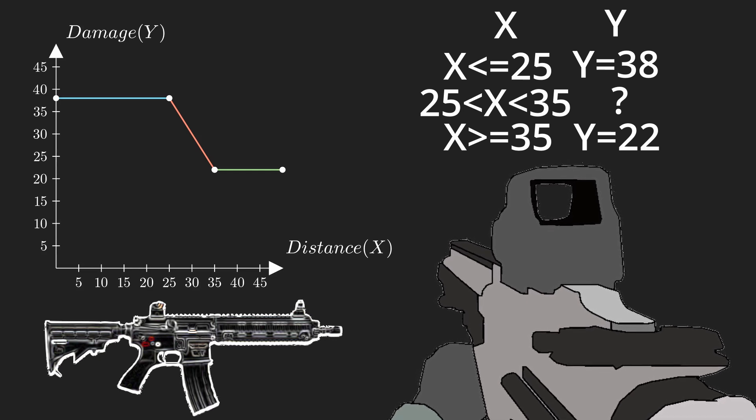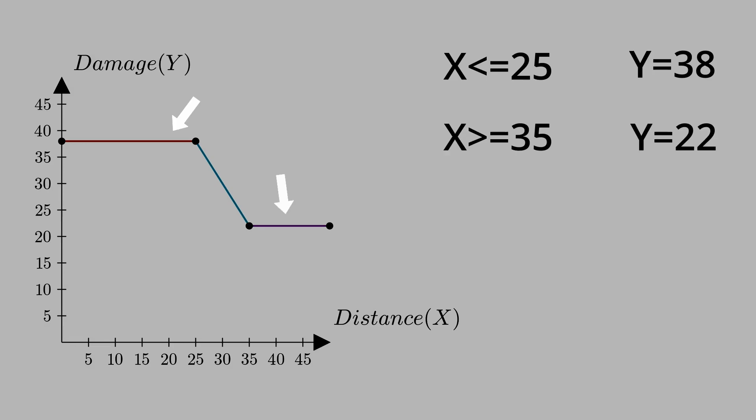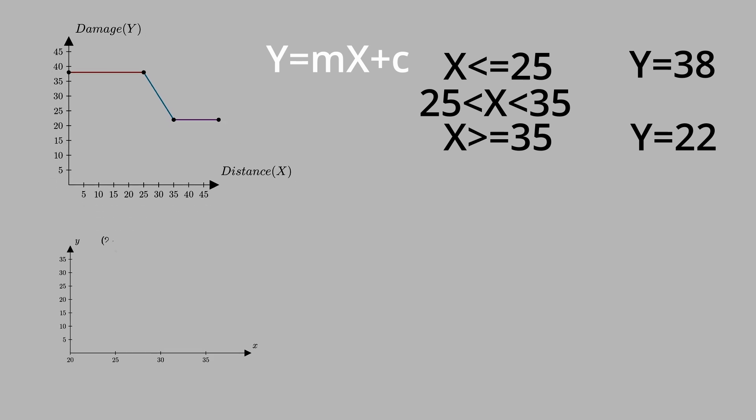Usually in games, this is connected by a line. How would we calculate damage, given any distance? There are a few ways to do this, I will show you two. The first method is that we first find the equation of each line in the graph and bound it. Between 25 and 35 is a bit harder. All lines have the equation Y equals MX plus C. Since we know two points the line goes through, we can find the equation of this line by using a few formulas. We can find M by using this formula, and we can find C by plugging in these values.